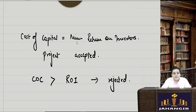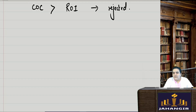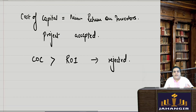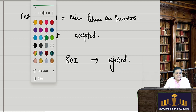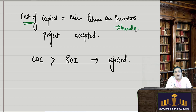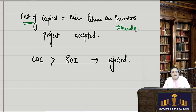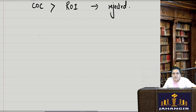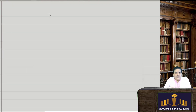When deciding whether to accept or reject a project, we find out whether the cost involved meets the benchmark. It is the hurdle rate — the minimum return investors expect on their investment. If the cost of capital is more than what the company can provide, the project will not be accepted and will not be floated in the market. We first find out the cost of capital and then decide whether the project should proceed.